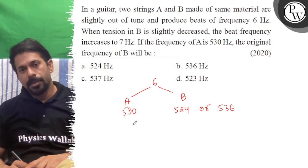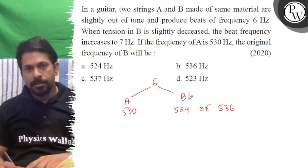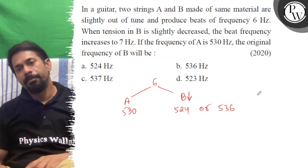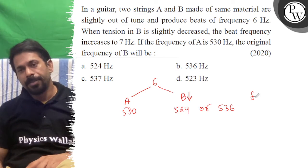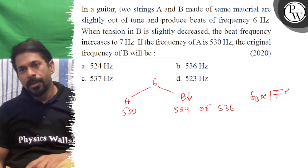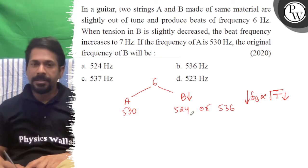Okay, so now what's happening is that we are decreasing the tension of wire B, so the frequency in B is directly proportional to tension. If we decrease the tension, F will decrease.